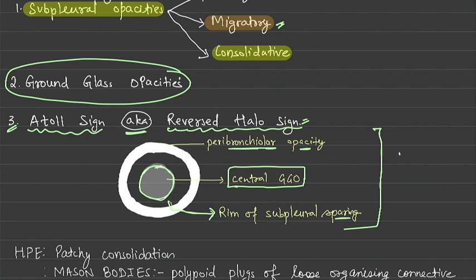There is a halo, but around this halo there is again an opacity which is peribronchial opacity, and the combination is called the atoll sign or reverse halo sign.